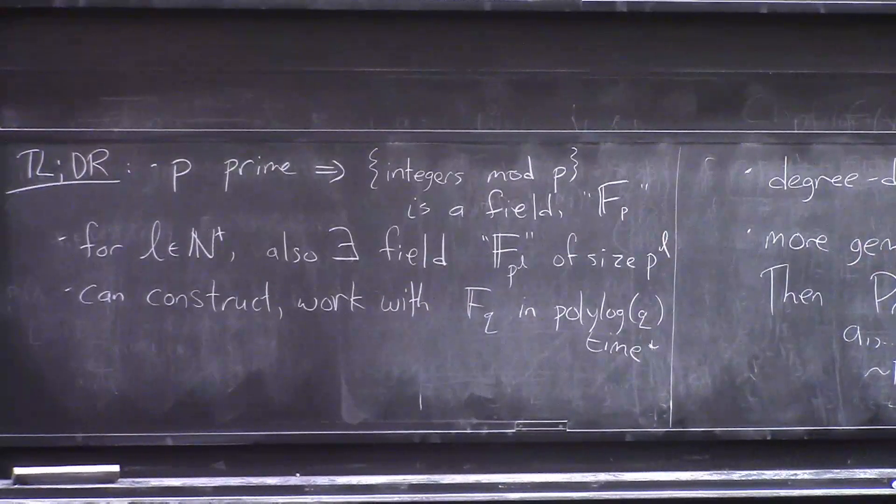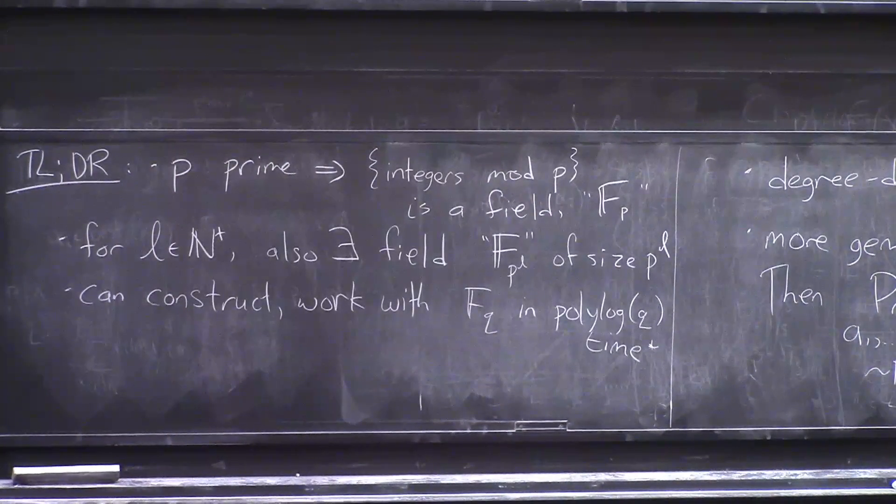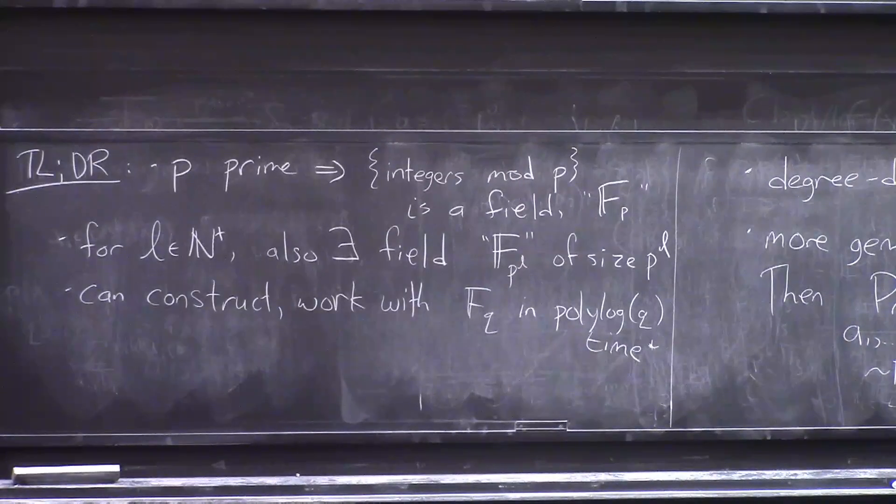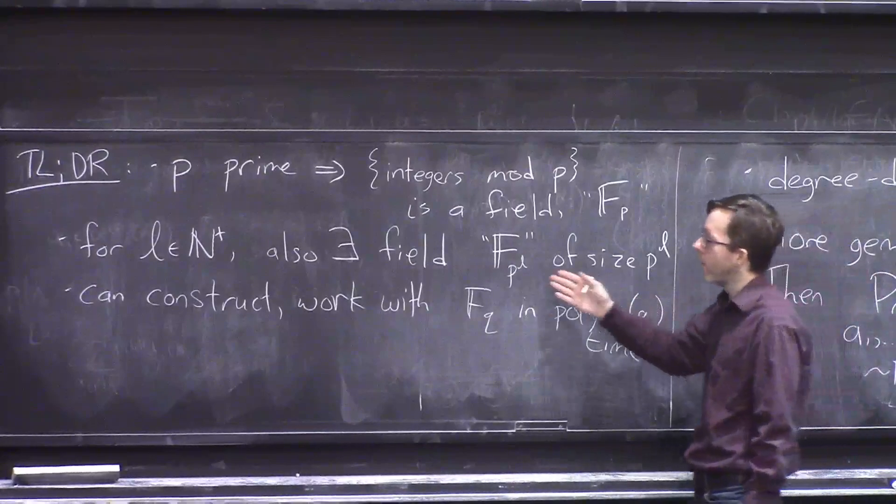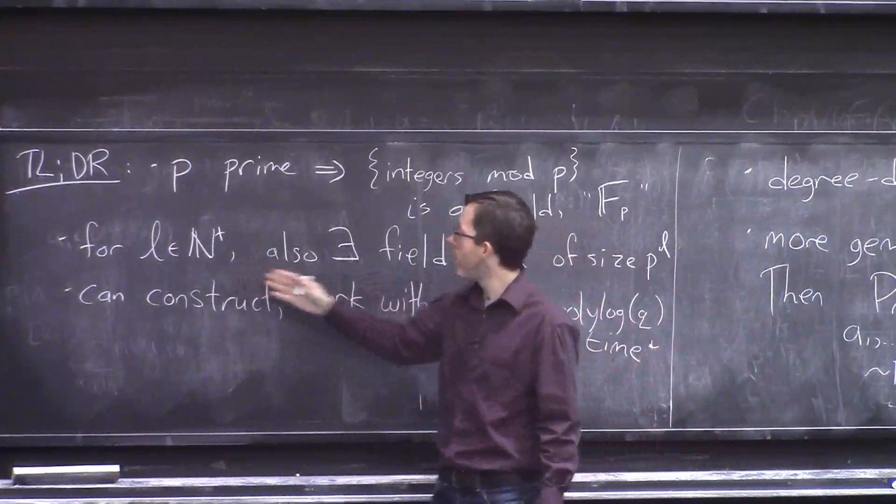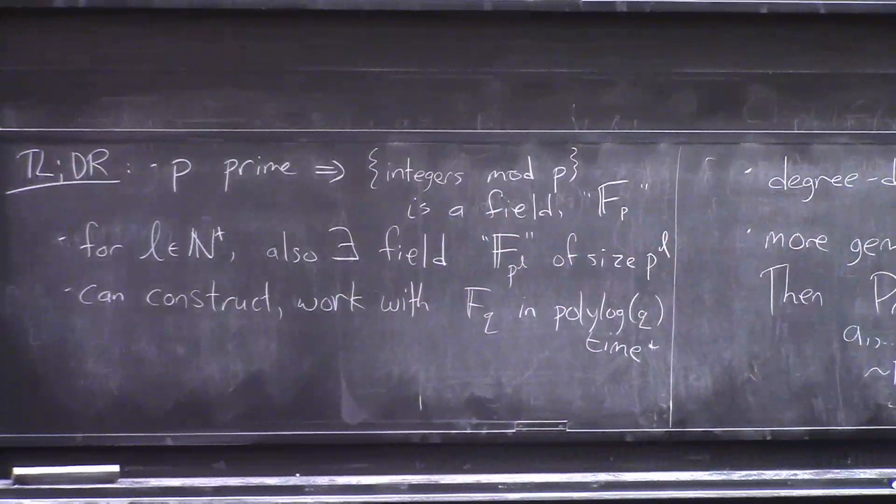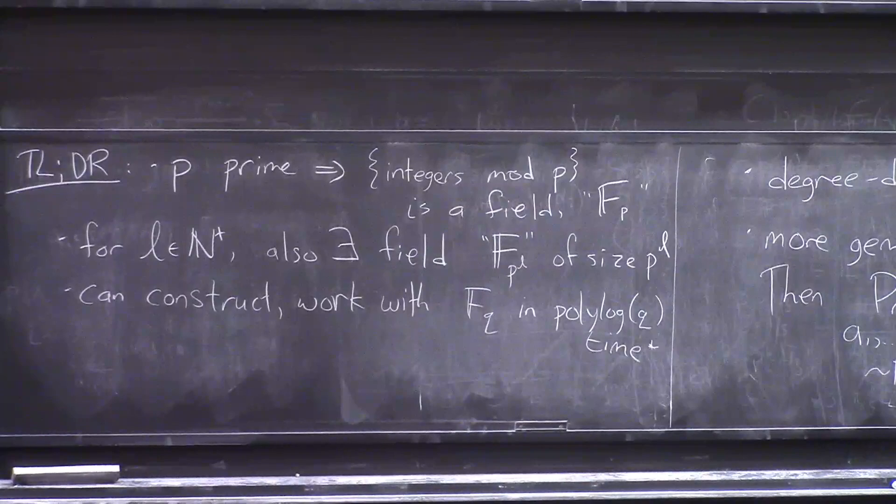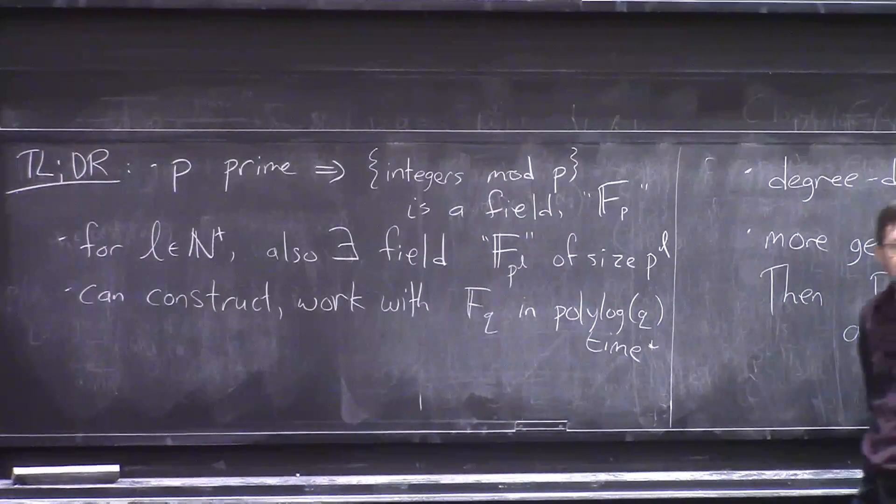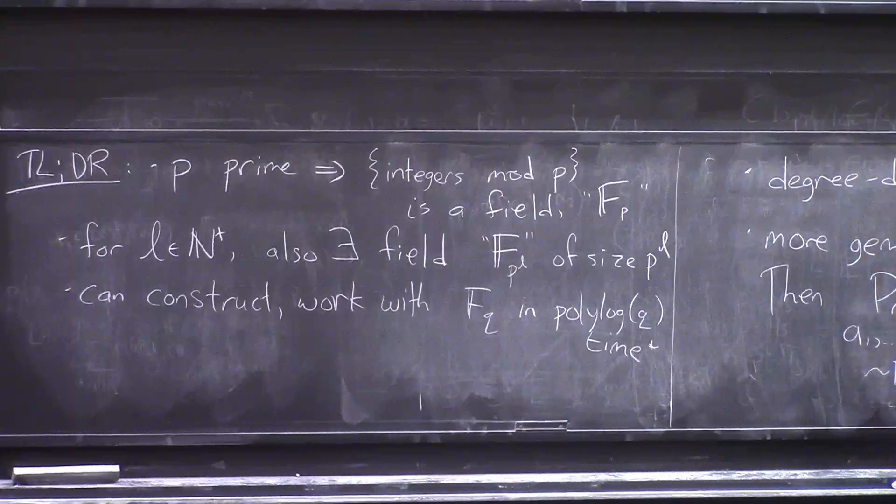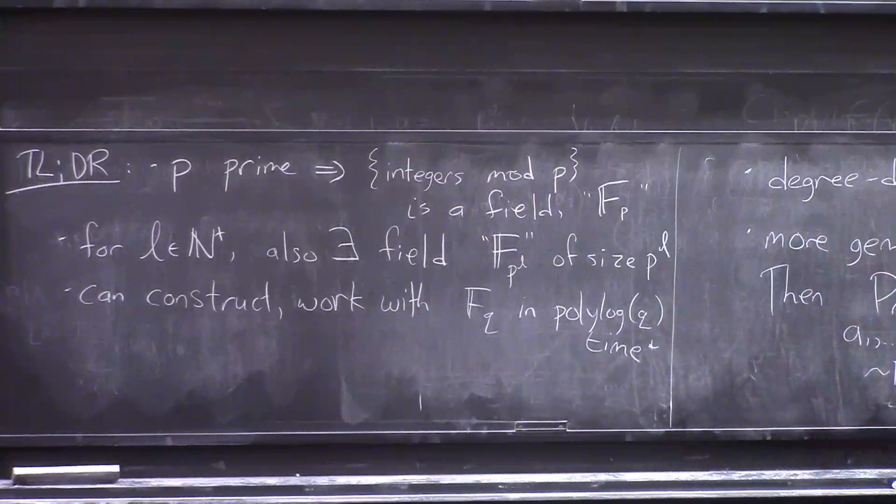However, there are other fields of finite size. In fact, there are finite fields with q elements whenever q is a power of a prime. But it's not as simple when it's not just a prime. But it is a fact that for every prime and every positive natural number l, there's also a field with p^l elements in it. And this is particularly important and useful in the case when p is 2. This is like the most common case in theoretical computer science, relying on the fact that for every power of 2, there's a field of that size.